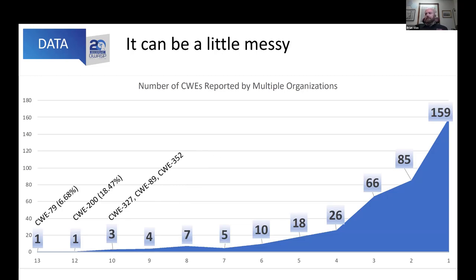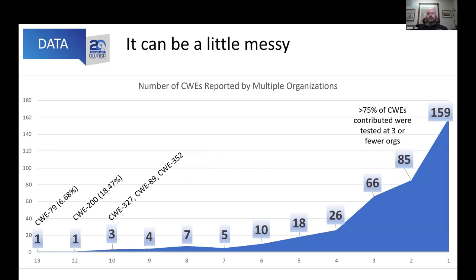For three others we have CWE-327 — use of a broken or risky cryptographic algorithm — CWE-89, which everyone should know is SQL injection, and CWE-352, which is CSRF. The other really interesting challenge was that of the almost 400 CWEs contributed, over 75 percent of them were only tested for at three or fewer organizations. This tells me that as an industry we have not standardized on what we call our test cases or what CWEs we map our tests to, which makes data collection quite an interesting challenge when we try to correlate all these different types of test results.